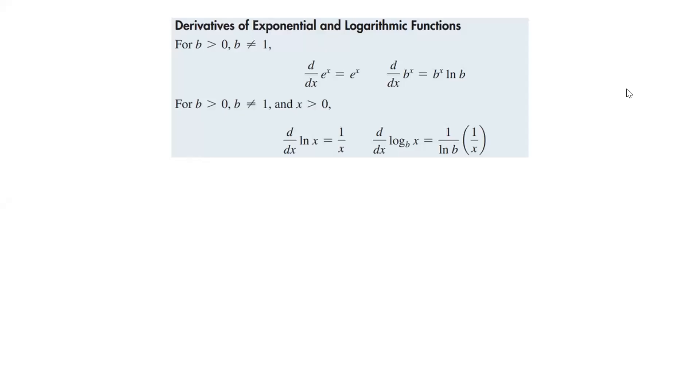Okay, here we just have some definitions, derivatives of exponential and logarithmic functions. So for the first couple, we have b has to be greater than 0 and b cannot equal 1. So the derivative of e to the x is e to the x. Again, we've seen that one before, not a problem.